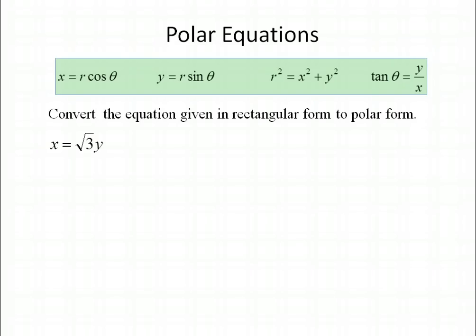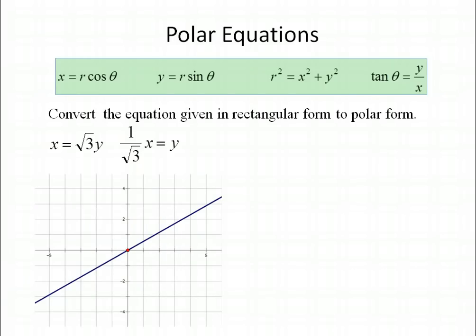Let's try this one. Suppose you have x equals the square root of 3 times y. First, isolate y to see the slope: the equation has a slope of 1 over the square root of 3 and a y-intercept at 0. We can graph that on our rectangular grid easily. Now let's convert to polar form — we have y and x, so let's turn this into y over x and then replace y over x with the tangent of theta.